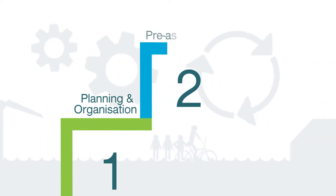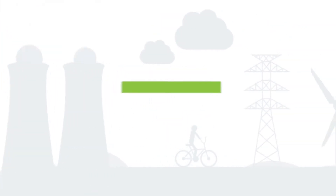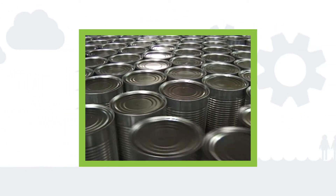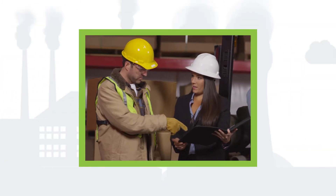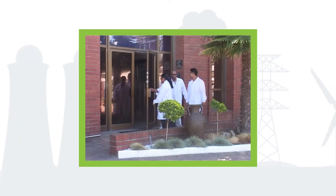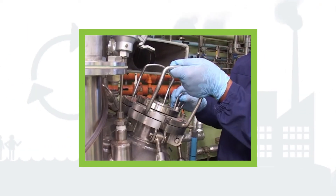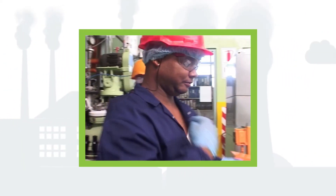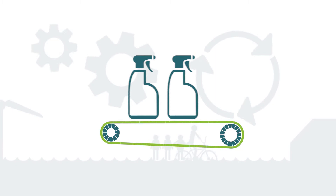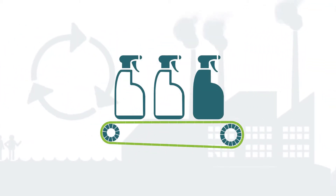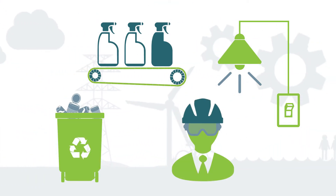Step 2. The pre-assessment looks into operating practices and resource consumption patterns to identify RECP opportunities or focus areas requiring more detailed investigation. The key activities include data gathering, a walkthrough of the plant or facilities to see what is happening on the ground, and identification of some no- or low-cost quick-win opportunities to foster management and staff buy-in. The pre-assessment specifically looks at unit operations within the production process, material and energy flows, housekeeping, and safety and occupational health practices.